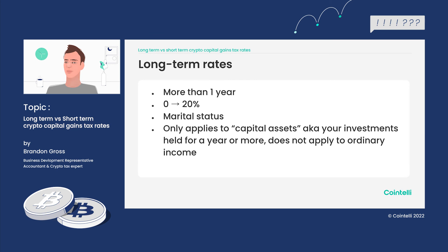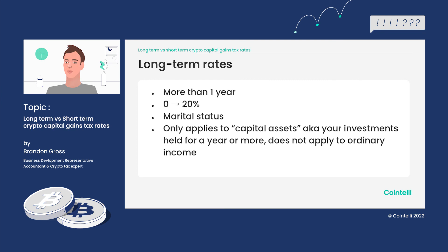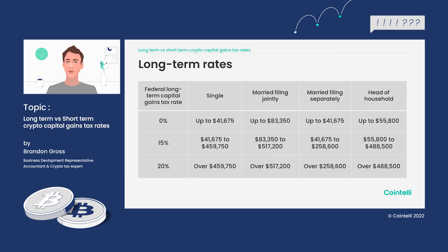There are also long-term rates, where your holding period is more than a year. The rates are significantly more favorable — anywhere from 0% up to only 20%, depending on your income and marital status. Just keep in mind this only applies to capital assets you've held for a year or more that you sold and made a profit on. It doesn't apply to ordinary income.